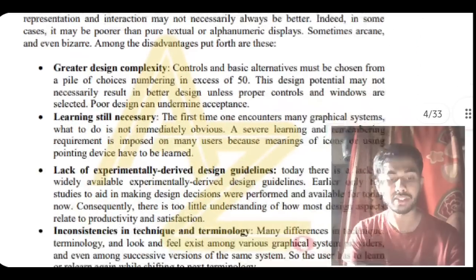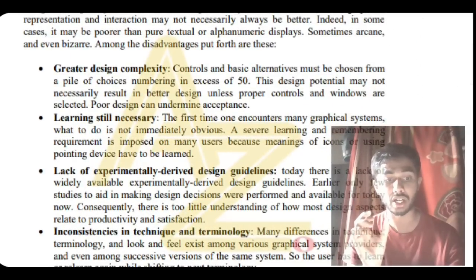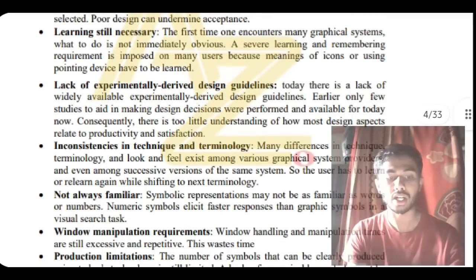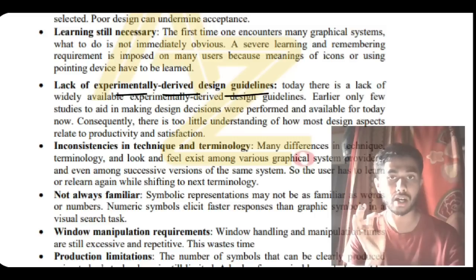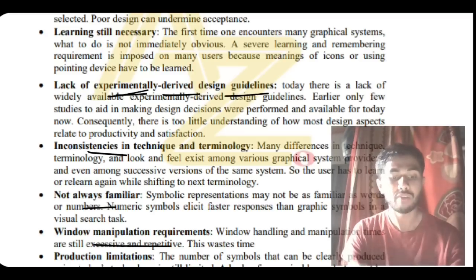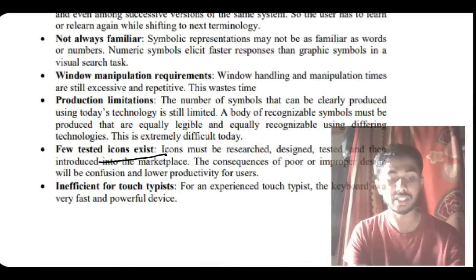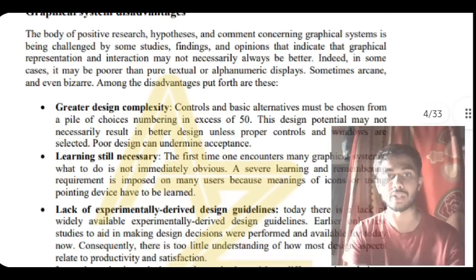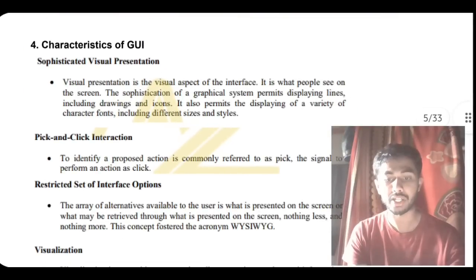The disadvantages of graphical systems include: greater design complexity — it is very complex to design good operating systems; learning is still necessary even with a good graphical system; lack of experimentally derived design guidelines; not always familiar; inconsistencies exist; window manipulation requirements; few tested icons exist; and inefficient for touch surfaces. Key takeaway: graphical systems are not efficient, not always familiar, not experimentally tested, and more complex.